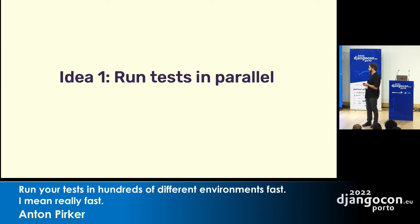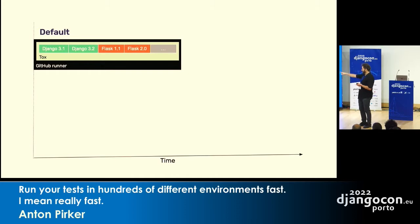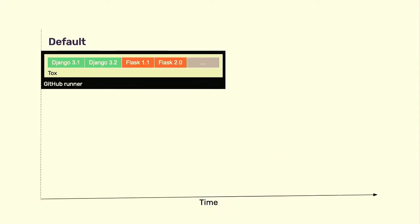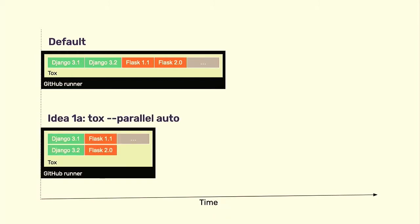My first idea was to run the tests in parallel, because I found out that when I run my tests locally, it only uses one CPU — and that's just a stupid idea. On the horizontal axis is time; we had one GitHub runner, which is the virtual machine GitHub Actions starts up. In it we started Tox, which created a virtual environment for each of our 400 environments and ran the test suite one by one — the slowest version possible. Tox has a --parallel auto flag that uses the number of CPU cores to run environments in parallel. This already greatly improved speed, going from 40 to 25 minutes.